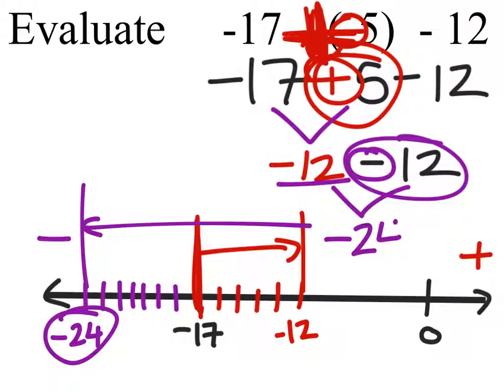So the final evaluation of negative 17 minus negative 5 is negative 12, and that gives us negative 24.